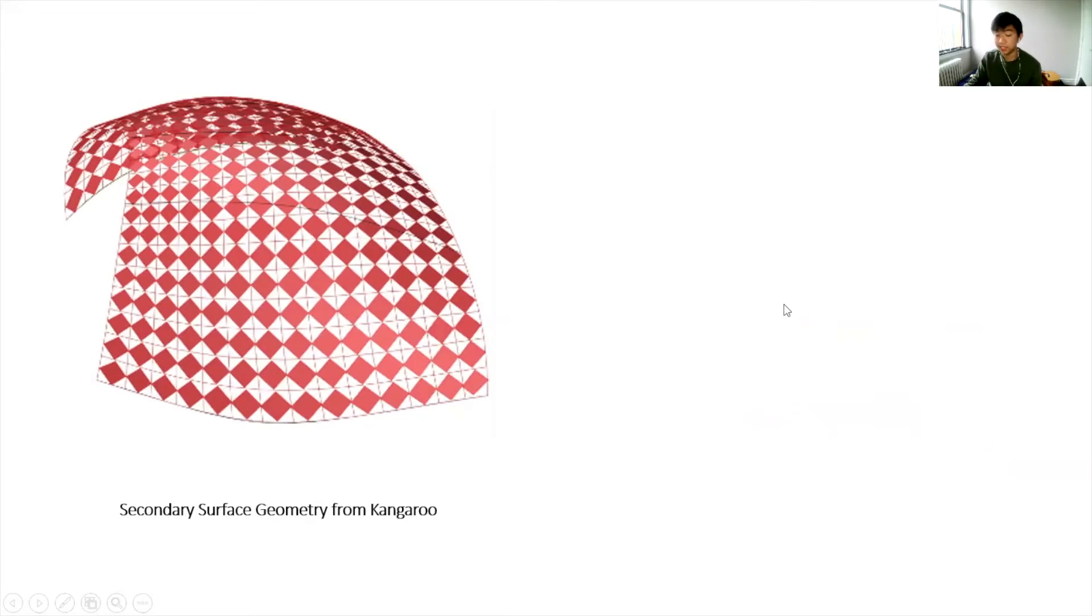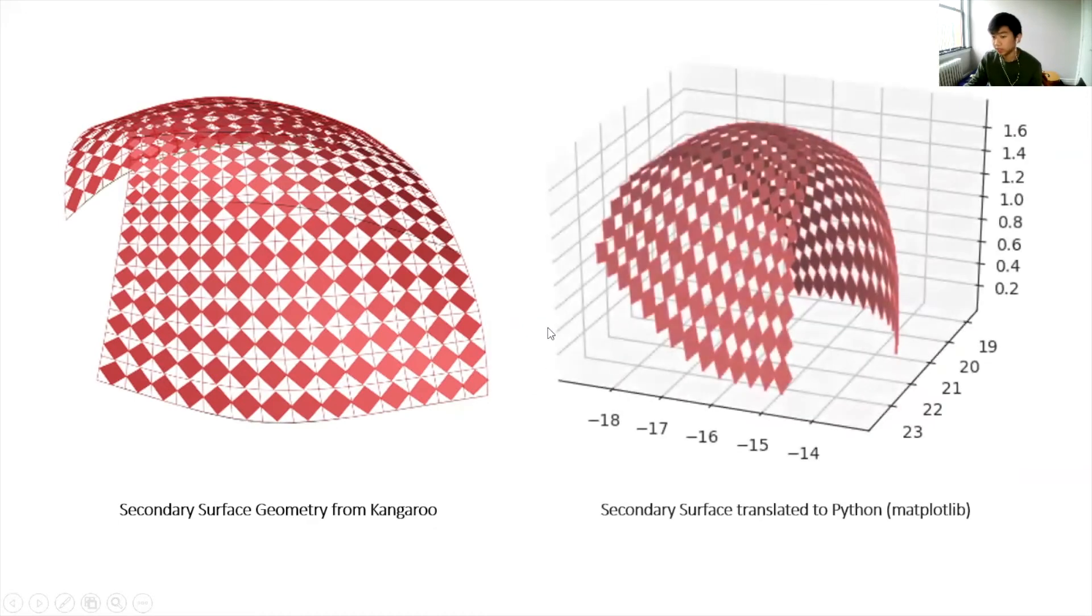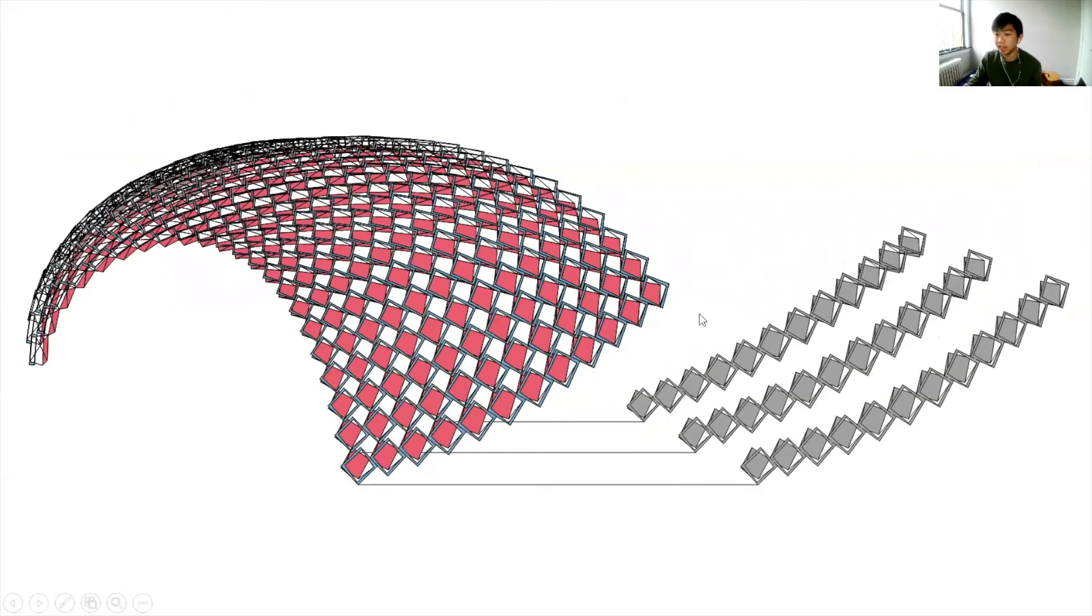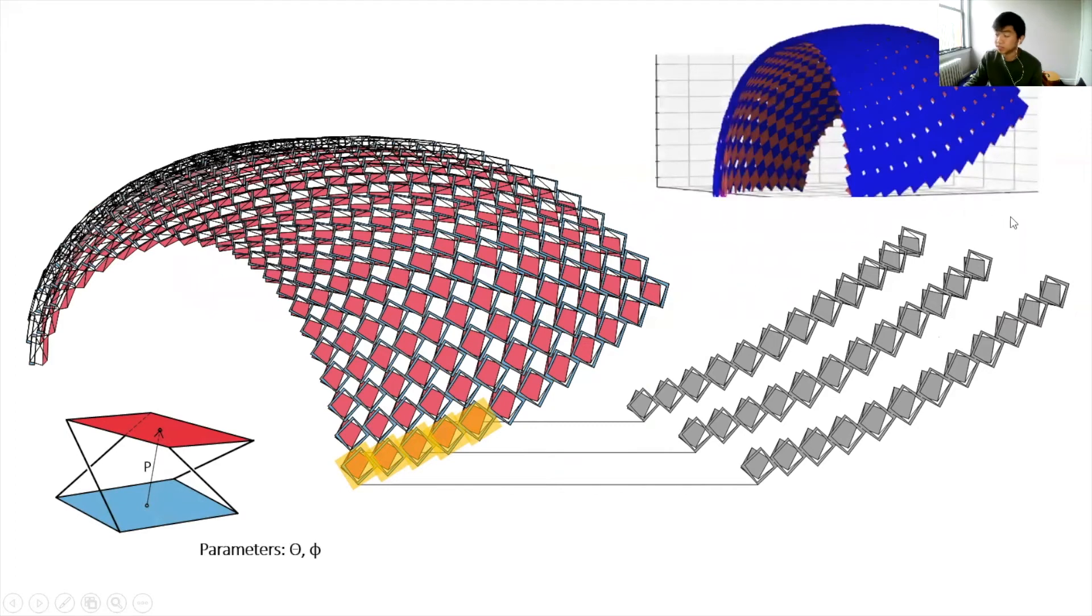To create the primary surface, Python's SciPy Optimization Library is used. Starting from the secondary surface geometry from Kangaroo, the Python script receives and translates this data. Here's what it looks like in Matplotlib. Then, the algorithm loops through all of the units and globally deploys their respective primary surfaces using a pre-assigned theta and phi. Here's what it looks like when the surface is not optimized.